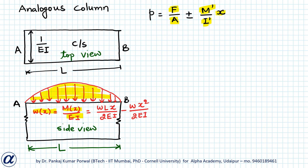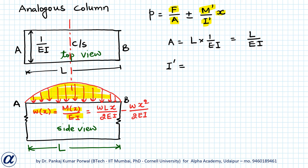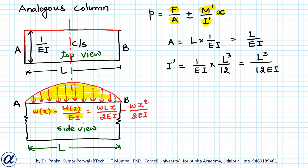The cross-sectional area is A = L × 1/EI = L/EI. For I', the second moment of area about the centroidal axis: since it is a rectangular column, I' = (1/EI) × L³/12 = L³/12EI.